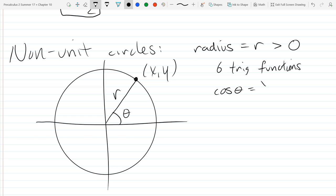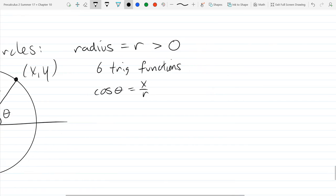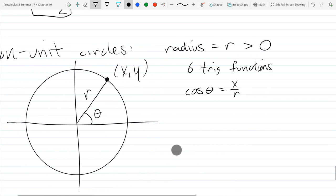Cosine of theta is going to be not just x, but x over r. And when r is 1, we get x over 1, which is just x. So on the unit circle, cosine is just x. But if you're not on a unit circle, if your radius is not 1, you have to leave it as x over r.